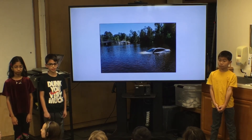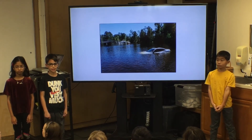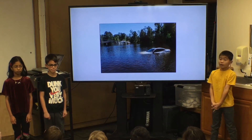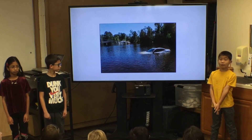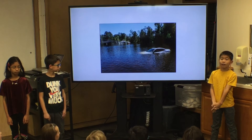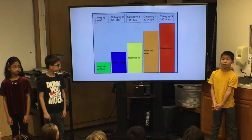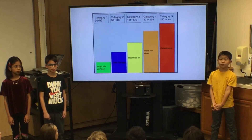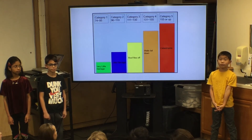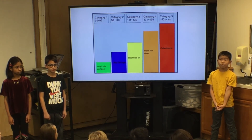A Category 1 hurricane is less dangerous, but a Category 5 hurricane is still the most deadly. A hurricane is rated by how fast the winds are. There are five categories. Category 1 is up to 95 miles per hour, which is the least dangerous. And a Category 5 is up to 155 miles per hour or above, which is the most dangerous.